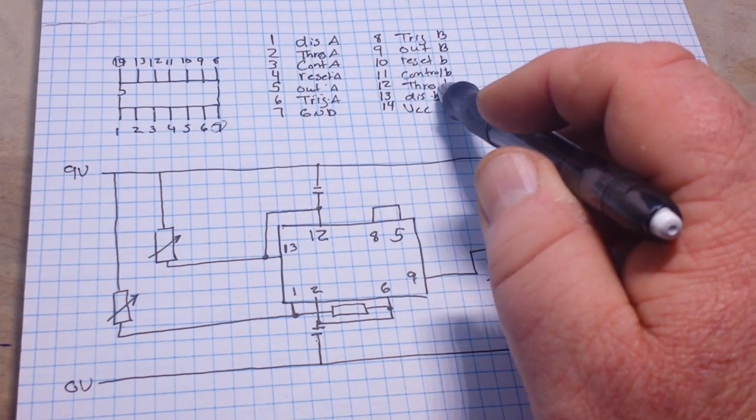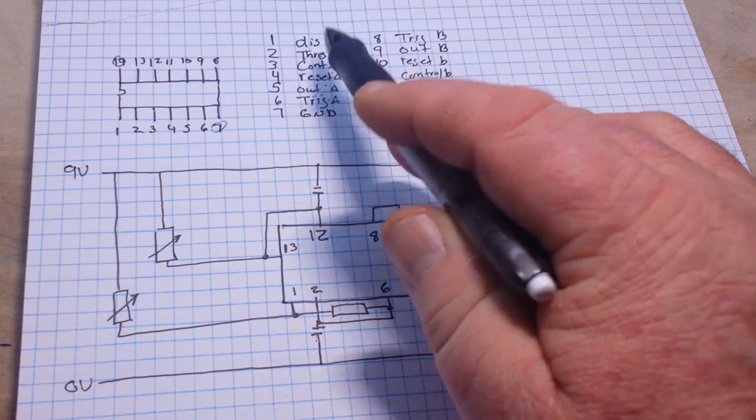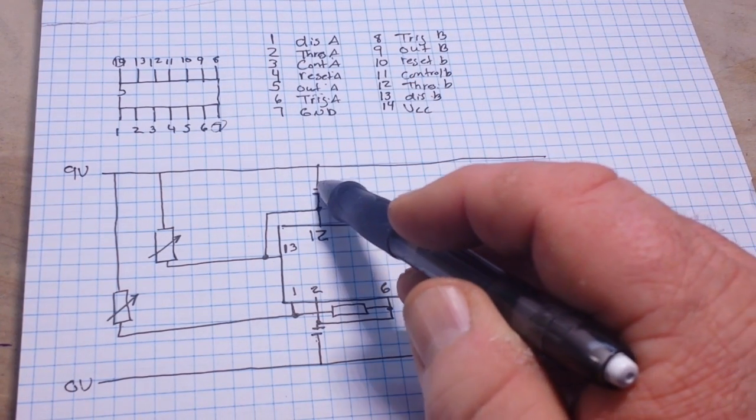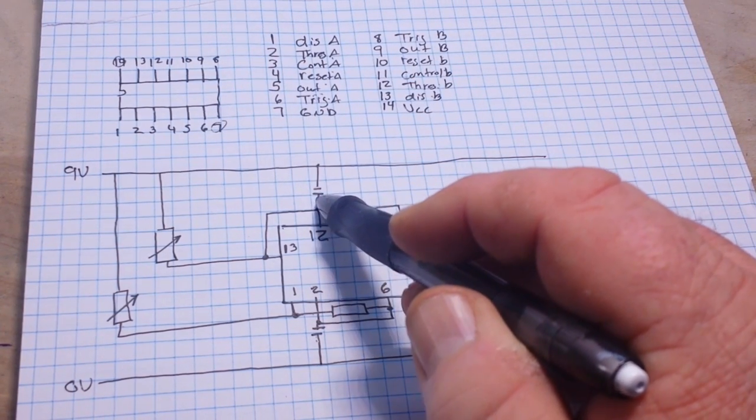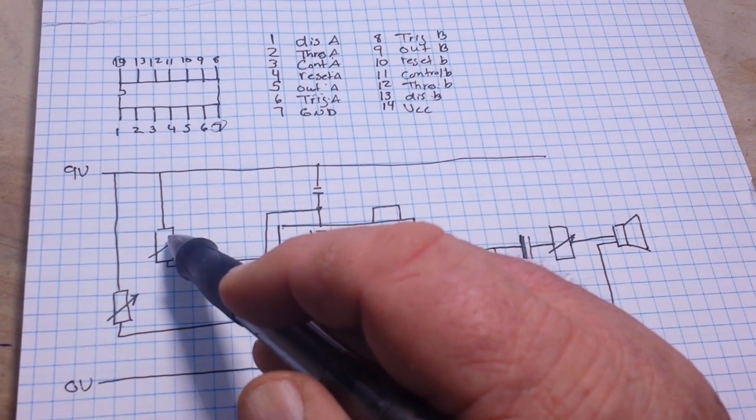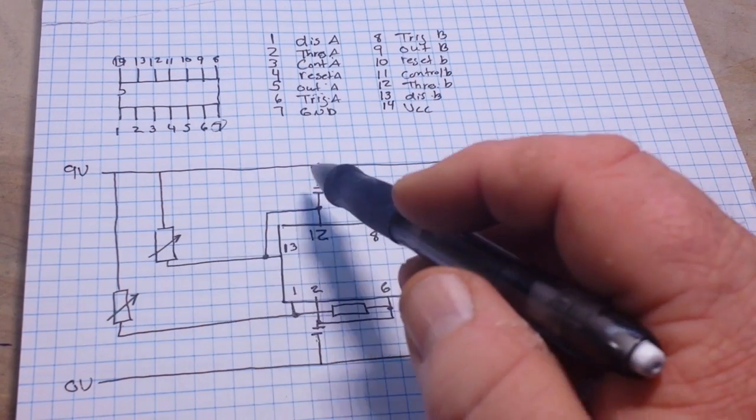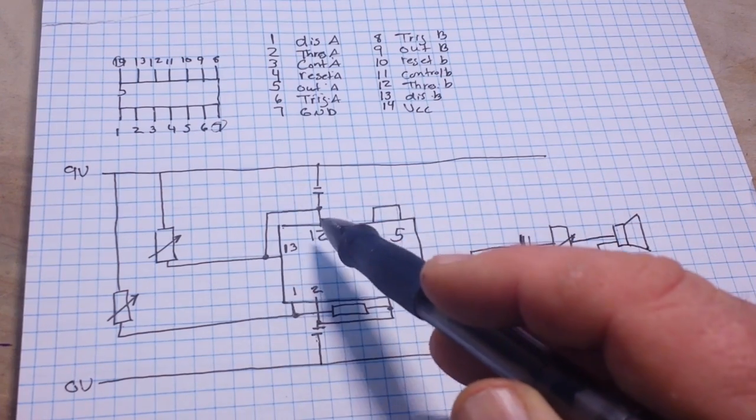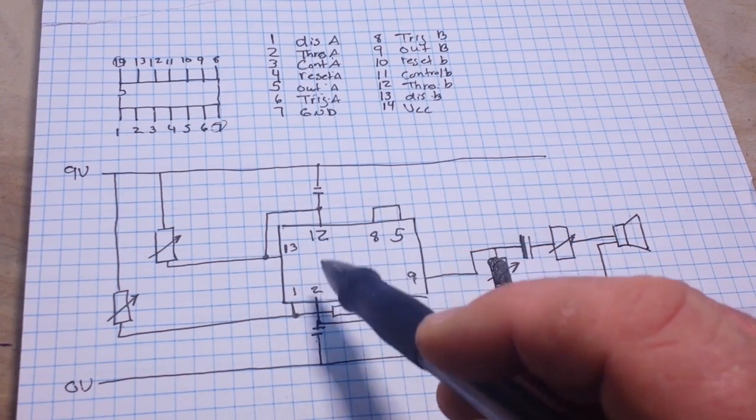Now, pin 12 is our threshold for B, and pin 2 is our threshold for A, and you see they both have capacitors on them going over to a potentiometer, which is just hooked up as a variable resistor. That gives us our RC constant for our timing.